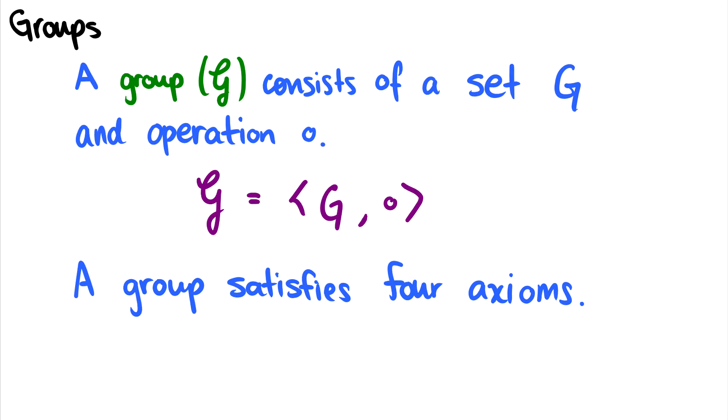So a group G, this nice fancy cursive G, consists of a set G and operation, which we'll call circle, and a group satisfies four axioms. So it's a pair with a set and an operation. We've seen this before. But there are four things that must occur in a group.